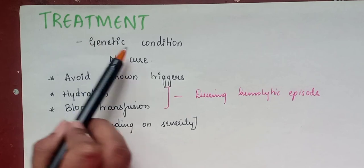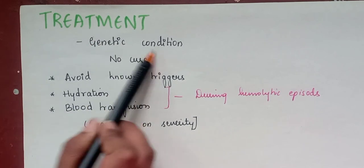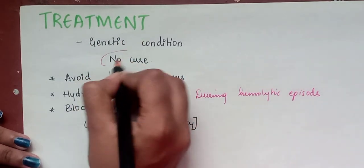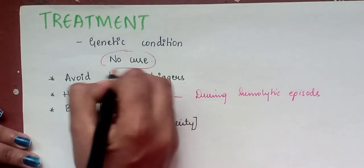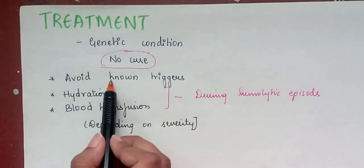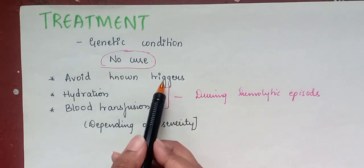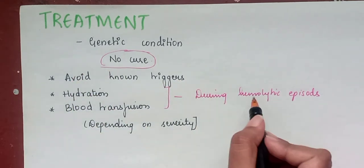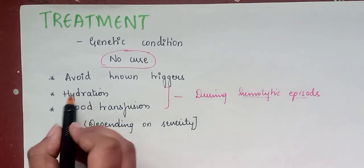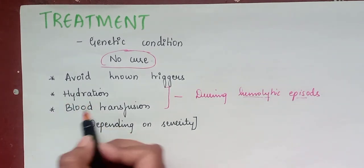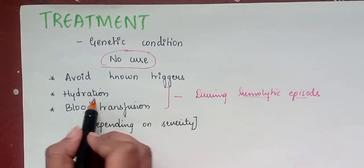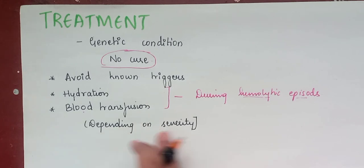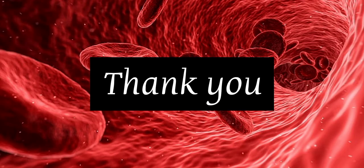For treatment, since G6PD deficiency is a genetic condition there is no cure, so we have to avoid known triggers. During hemolytic episodes the patient should be hydrated, and blood transfusion can be done depending on the severity of the disease. Thank you for watching the video.